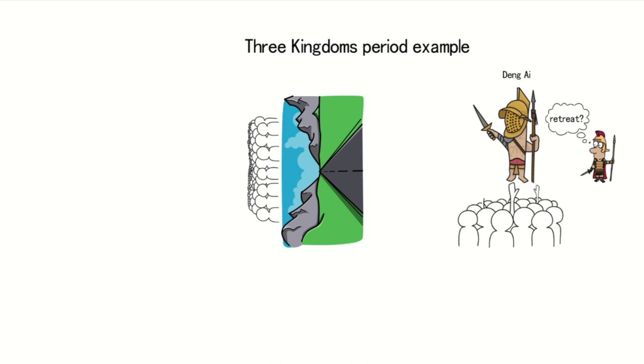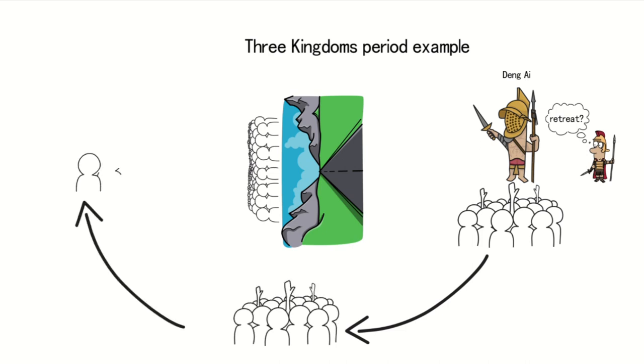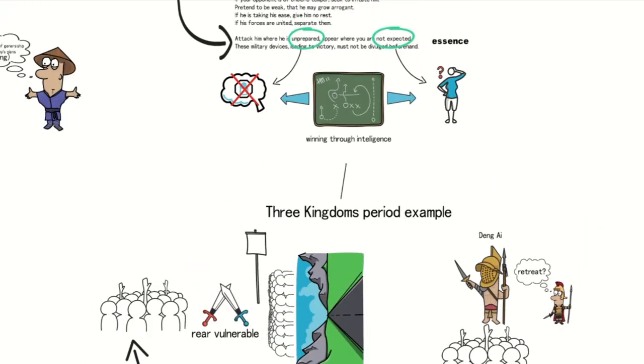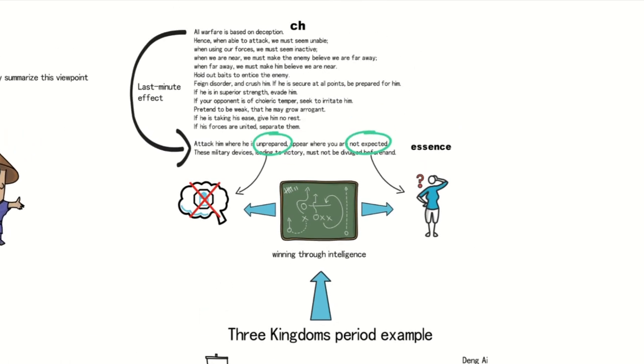However, Dang Aai remained unfazed by this challenge. Quietly, he led his soldiers into the mountains, executed a daring deep flanking maneuver, and penetrated deep into the enemy's rear. When the enemy learned of this situation, they were at a loss because they had overly fortified their positions, leaving their rear vulnerable. In the end, they had no choice but to surrender. This example exemplifies a classic strategy of catching the enemy off guard, and we can clearly see the crucial concept of change embedded within it.